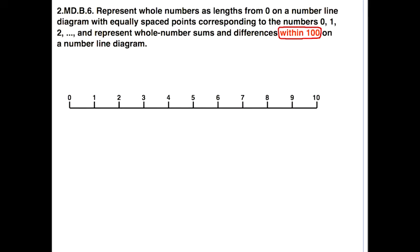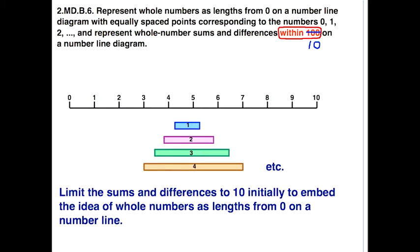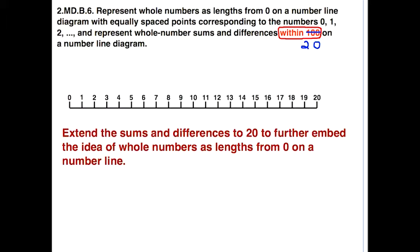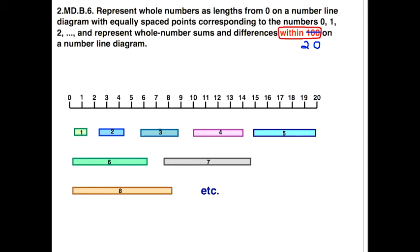This standard limits us to sums and differences within a hundred, but it's a good idea to limit sums and differences to ten at the beginning. This way we can embed the idea of whole numbers as lengths from zero on a number line. Then extend to twenty to further embed the concept. It makes sense to limit ourselves to twenty so we can have physical representations — all these different lengths of strips — to enable us to physically model these problems.